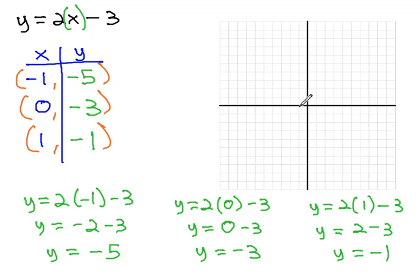The points we have are negative 1, negative 5, 0, negative 3, and 1, negative 1.